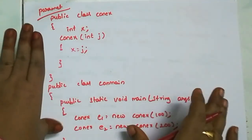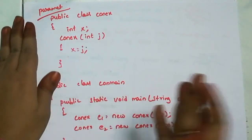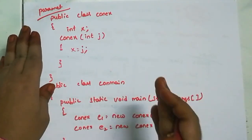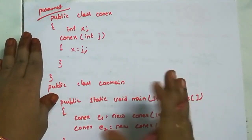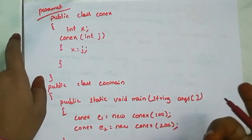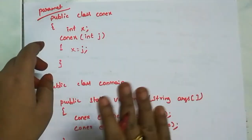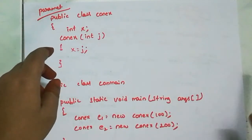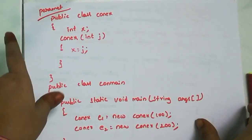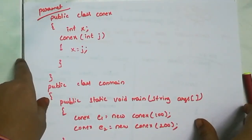So those are the two types of user-defined constructors: the No Argument constructor and the Parameterized constructor. The next topic is the destructor — we will discuss its definition in the next class. Thank you.